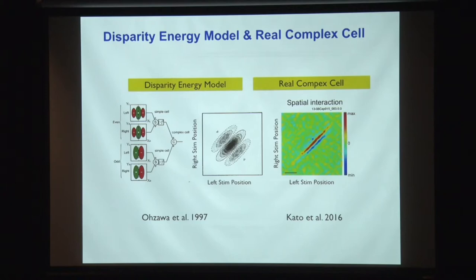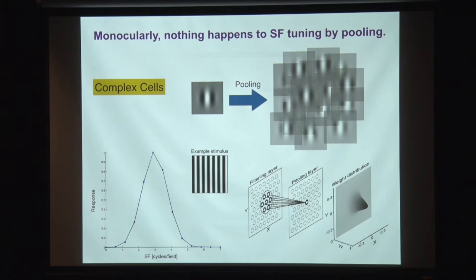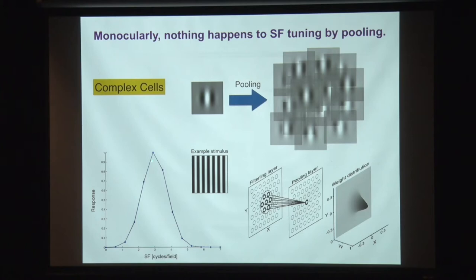What we did, following the AI lead of CNN, was to try pooling. A complex cell usually is already pooling simple cells. But we pooled complex cells again to generate a wider receptive field. Monocularly, it doesn't do anything — if you measure spatial frequency tuning for a single complex cell and then pool many of those, you get exactly the same tuning. It doesn't improve any tuning at all.